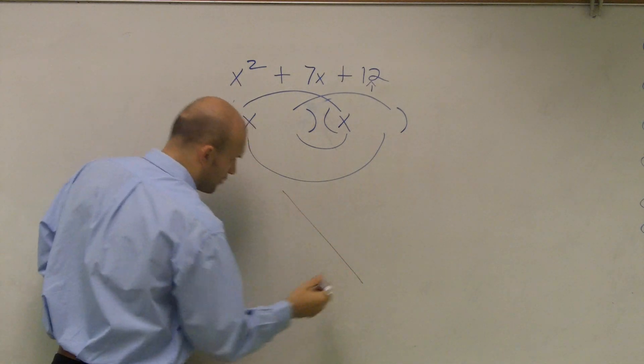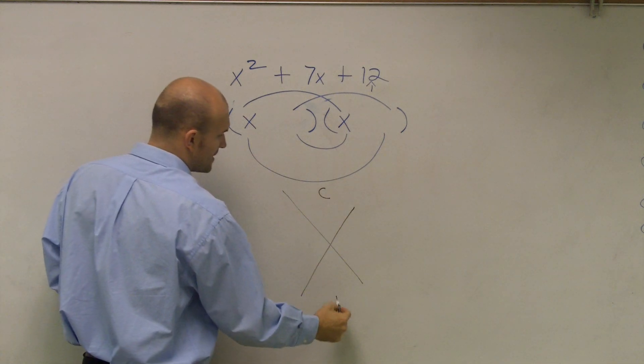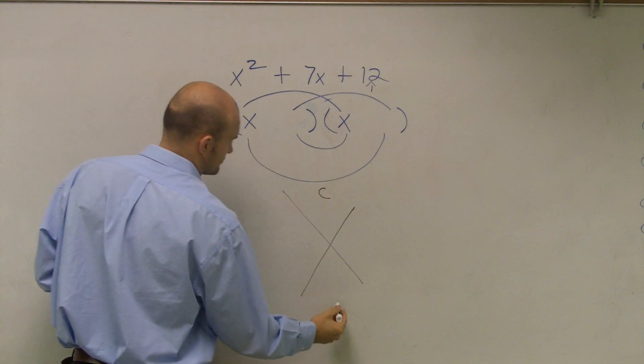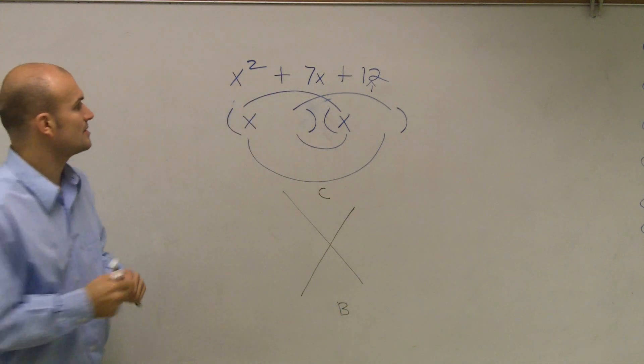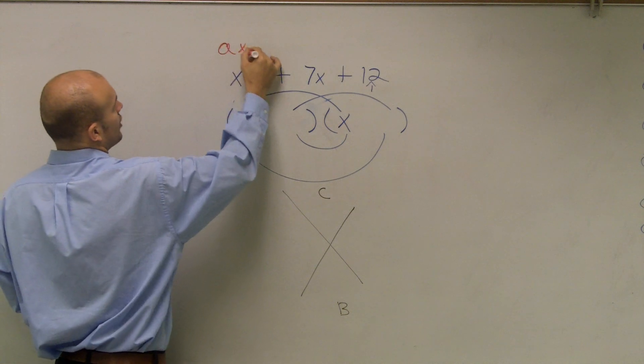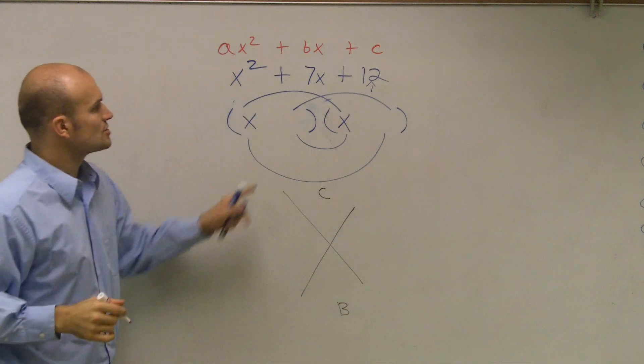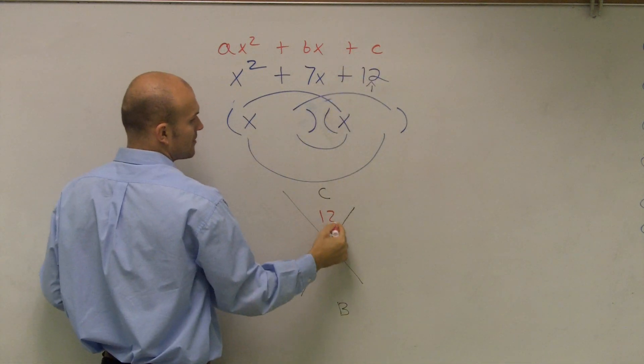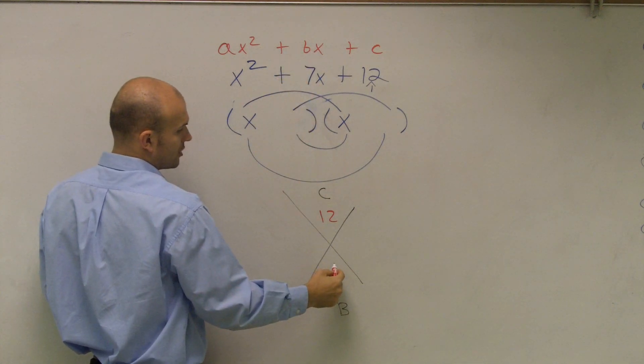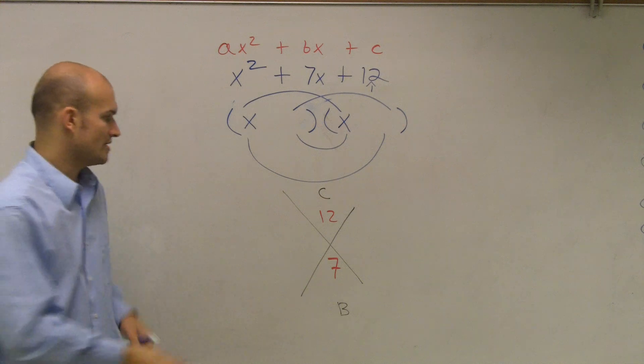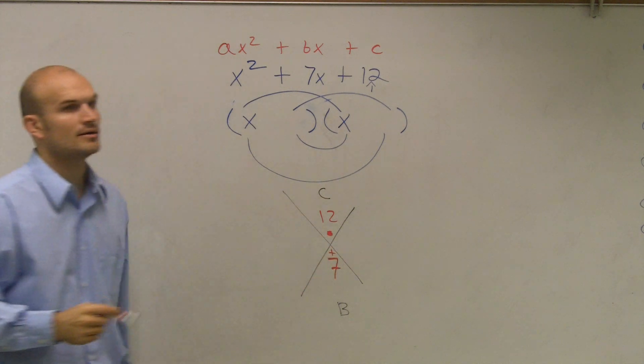So I told you guys, just write in a little diamond with c up top. Because remember, the quadratic form ax² + bx + c. So c is my constant or my number, which is 12. And b is my coefficient on my linear term, or x, which is 7. So then I said to write a multiplication dot up here and a plus symbol down there.